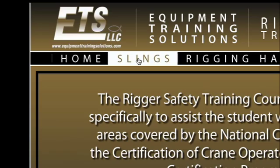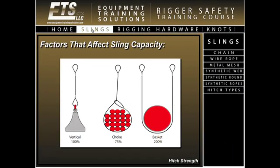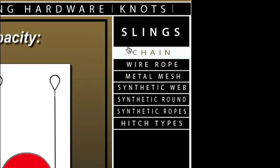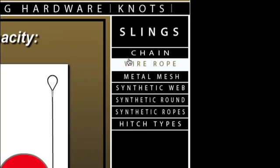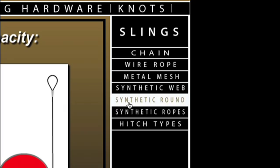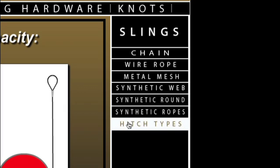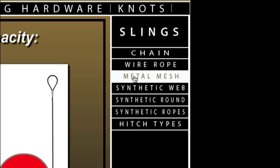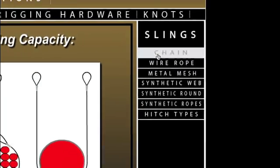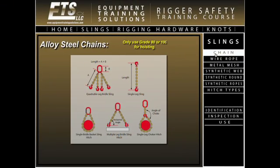The slings section. By left clicking on the slings button, you will be directed to the slings section of our program. You will notice on the right side of your screen a list of seven buttons. These buttons represent the different types of slings and hitches used in the construction industry. By left clicking on one of these buttons, you will be directed to the coinciding section of that button.